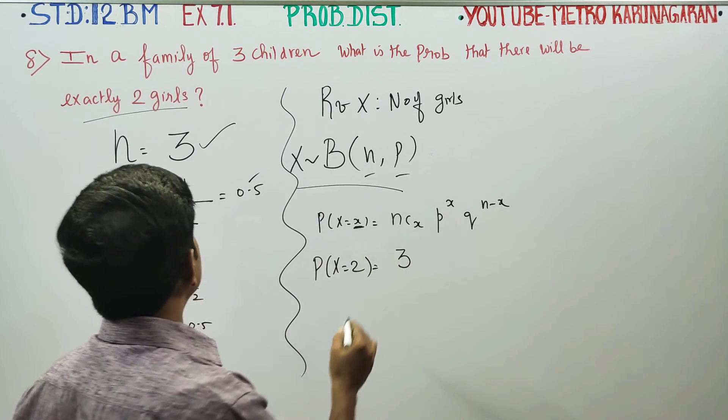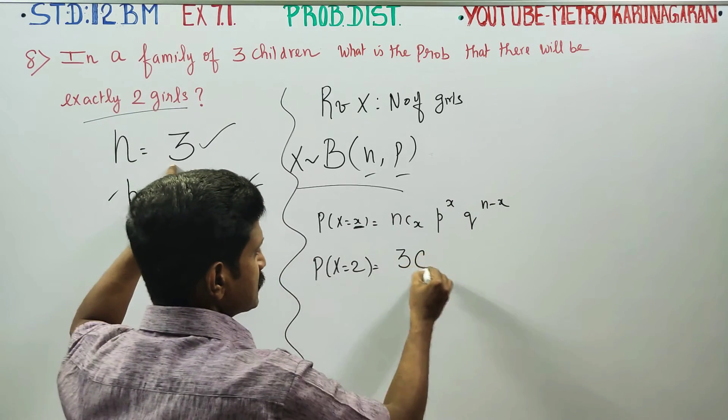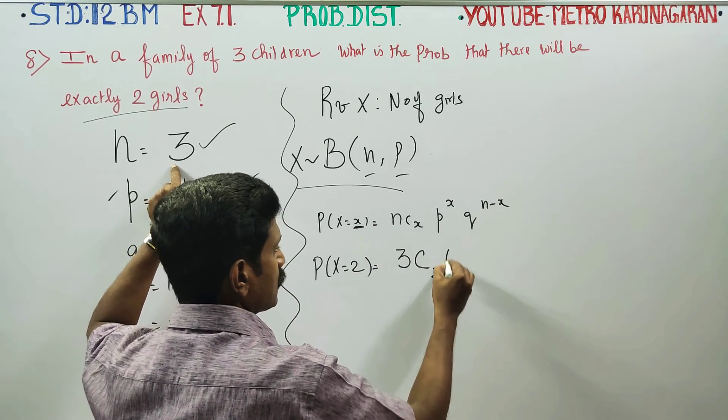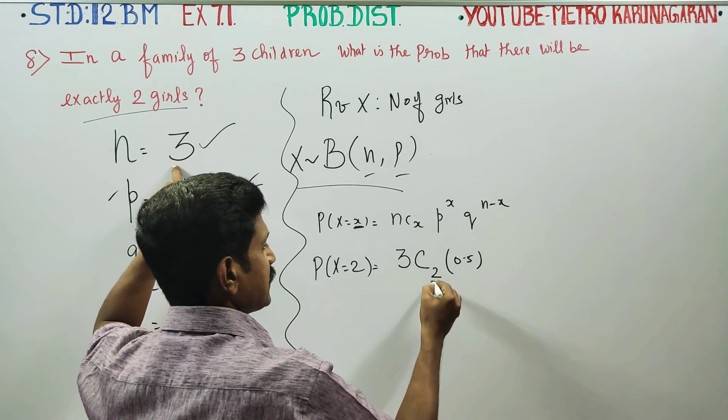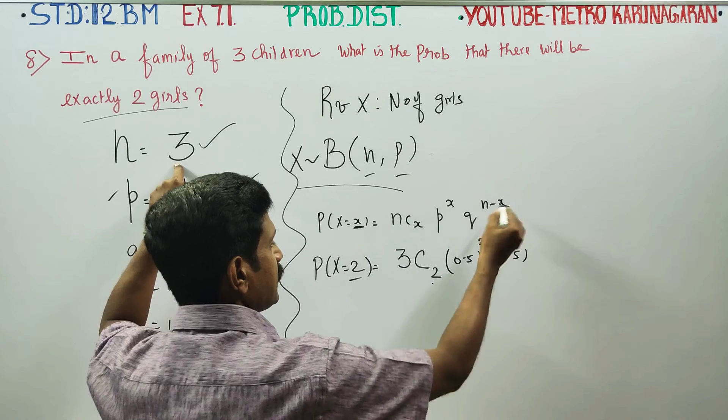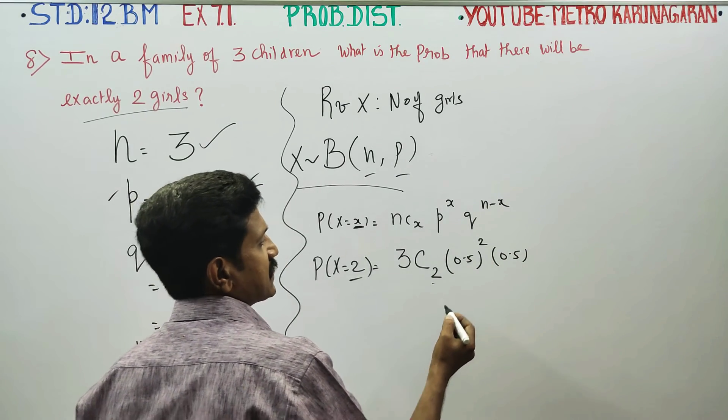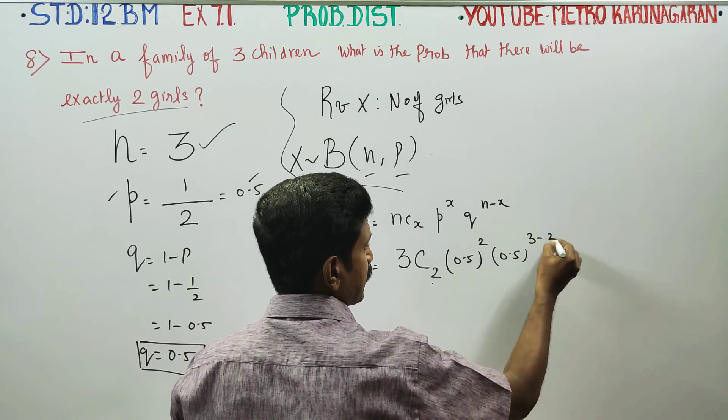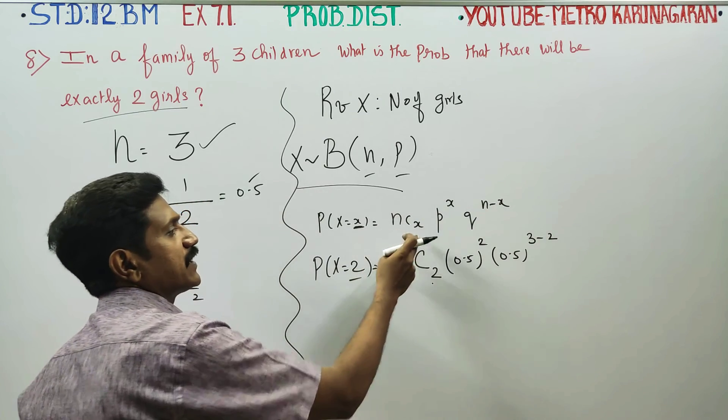x value is 2. p is equal to 0.5, p power x is 0.5 squared. q is 0.5. n minus x, 3 minus 2, n minus x equals 1.